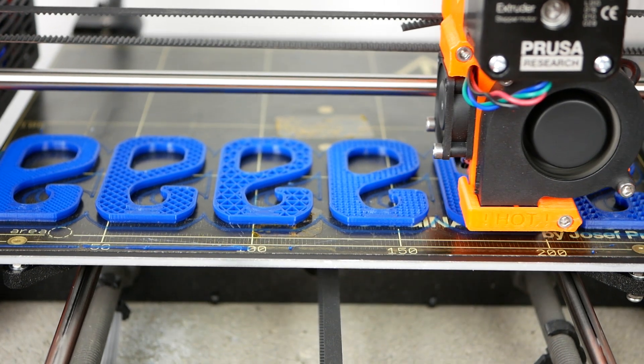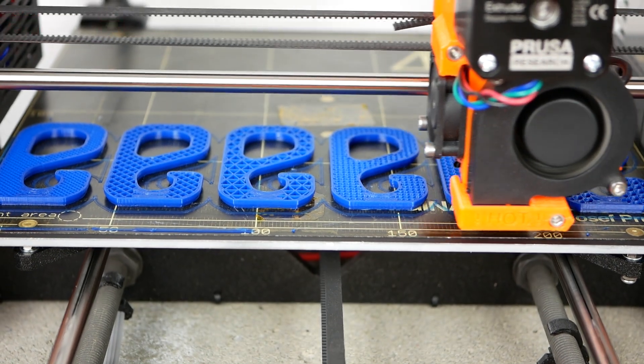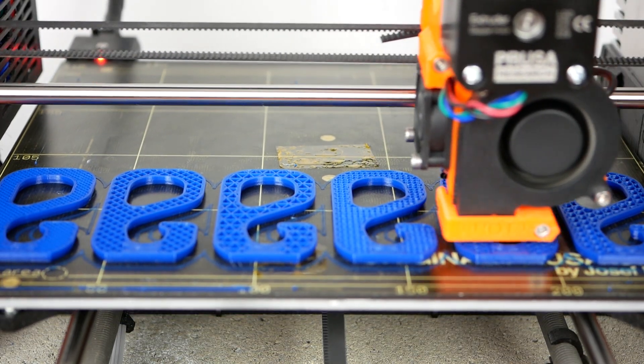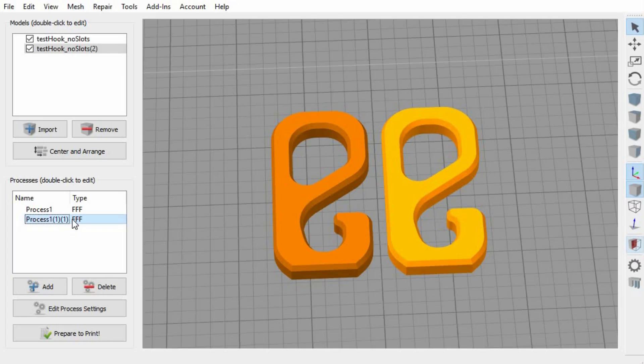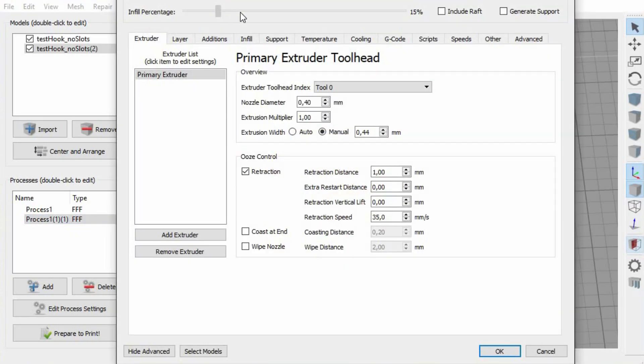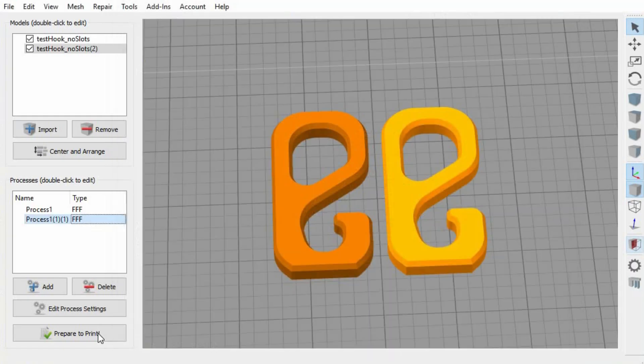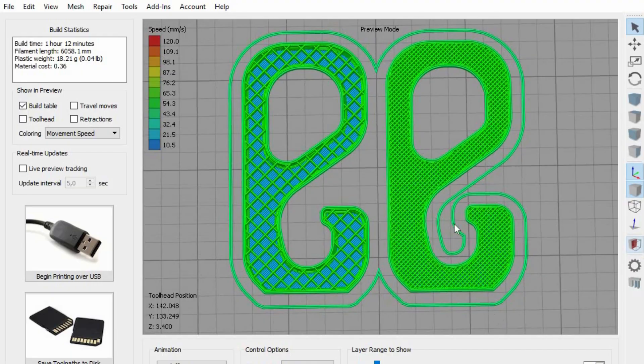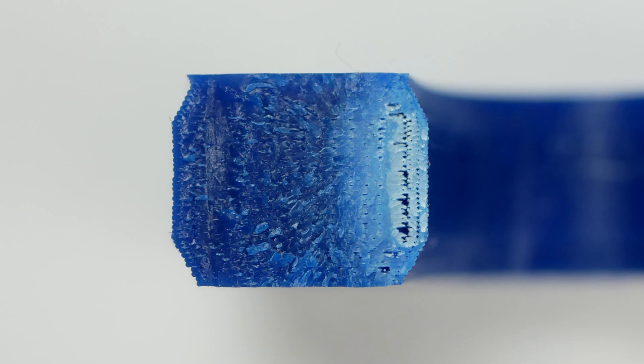If you have your material dialed in you will usually only adjust a small number of settings before each print depending on the requirements of your part. If you want it to be strong many will only adjust the infill density to a higher value. This will scale the infill pattern density and defines how much of the internal cavity is filled with material which can go up to even a fully dense part.